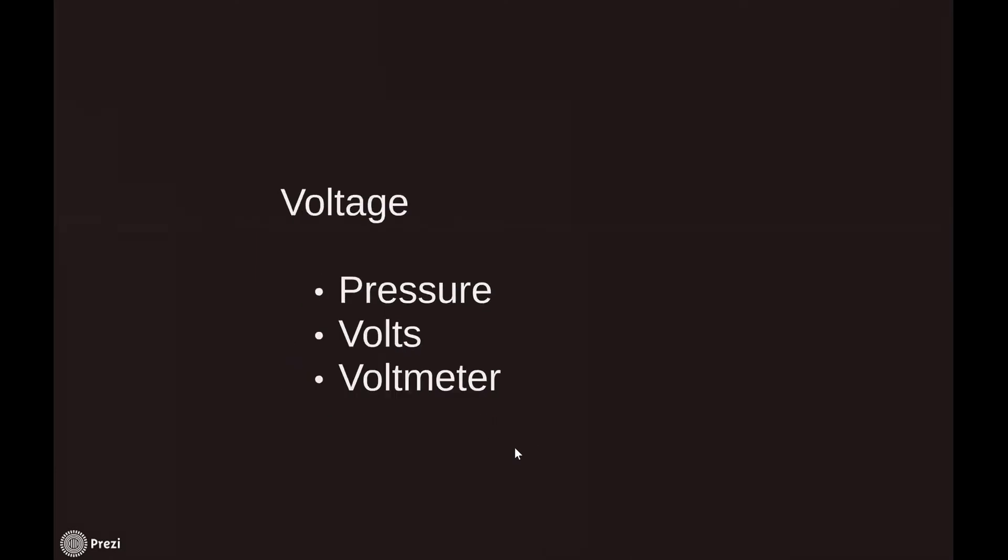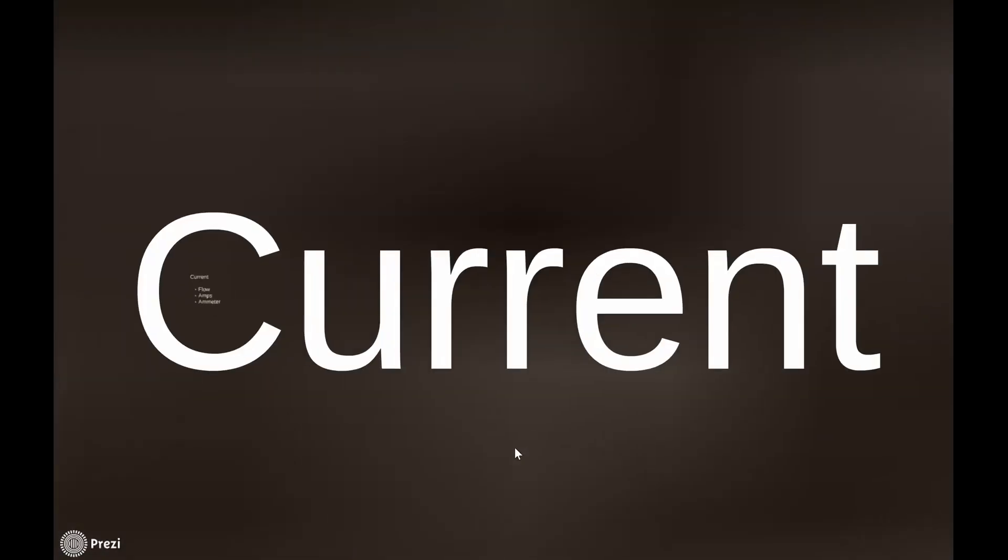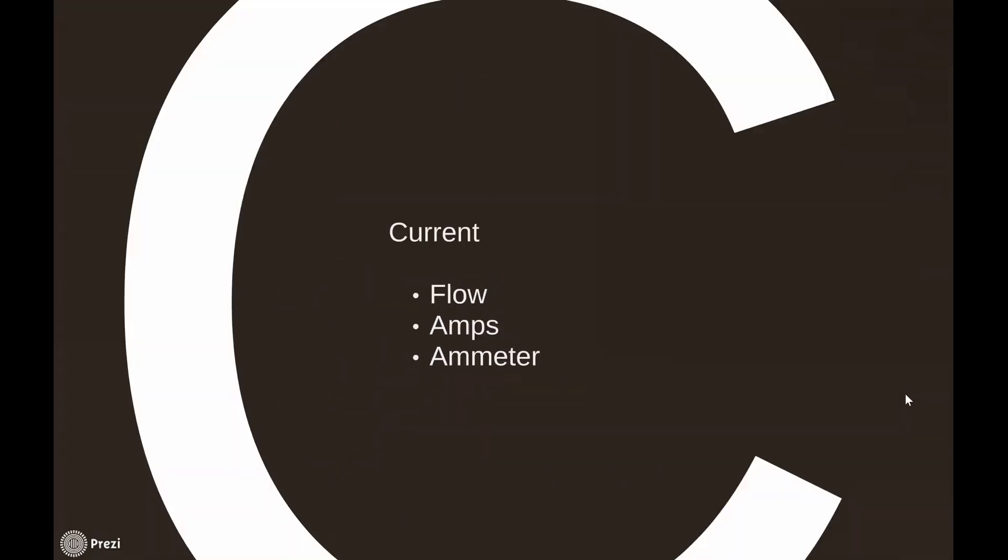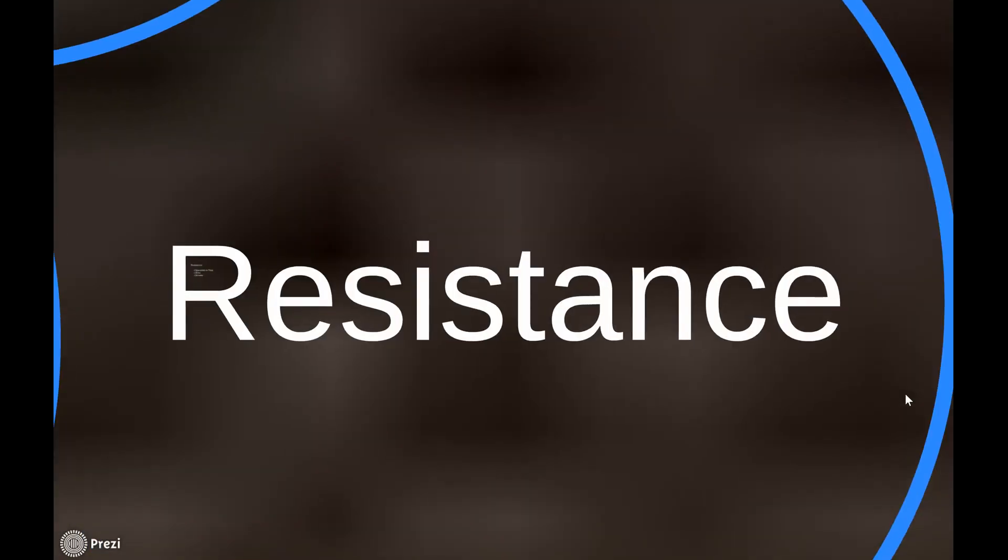The next one we're going to look at is current. Current can be equated with the word flow. Electricity flows. We have voltage, which is pressure, pushes the flow, which is current. Current is flow. We measure current in amps and we use an ammeter to do it, or sometimes it's called an amp probe.